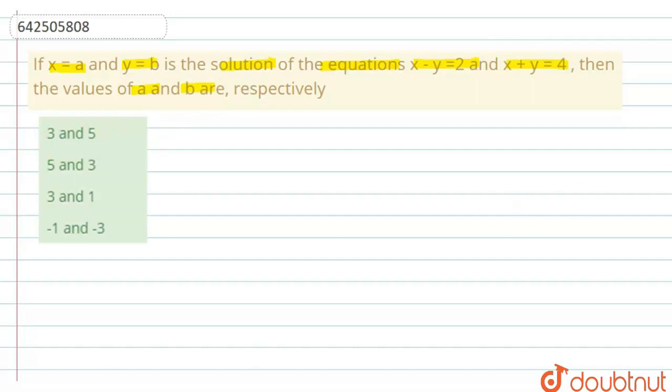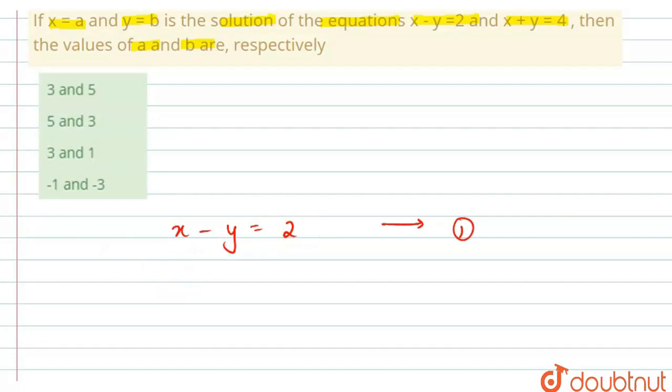We have two equations here: x minus y equals 2, which is equation 1, and x plus y equals 4, which is equation 2. Now we have to find the values of a and b.